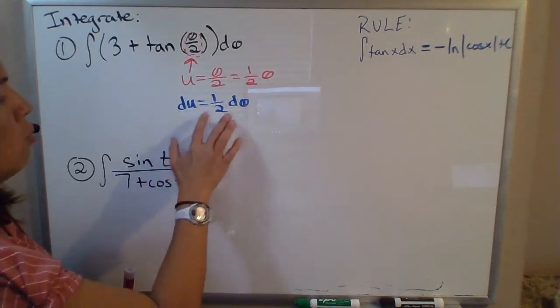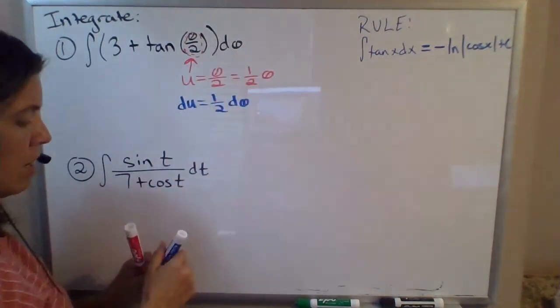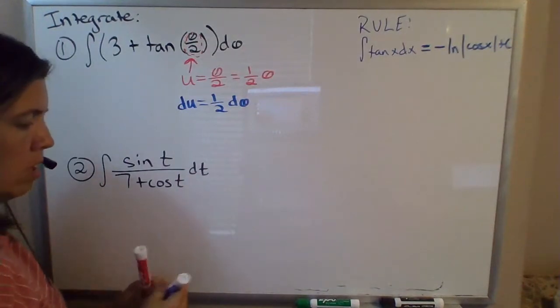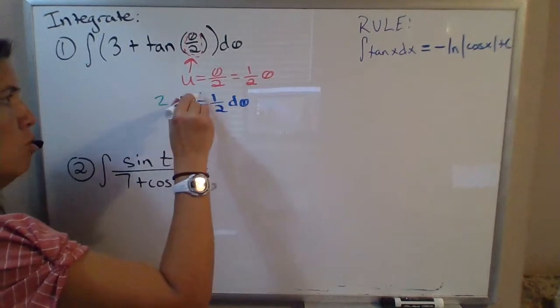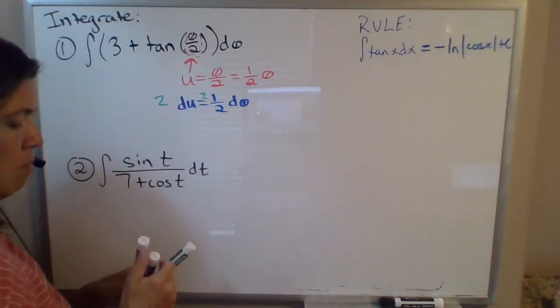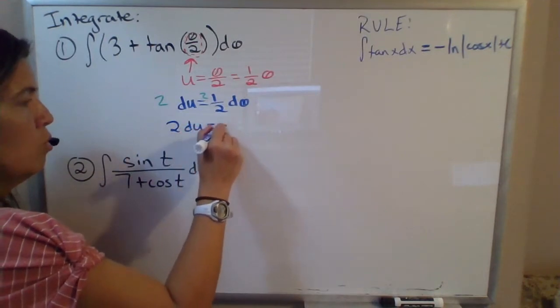Okay, well notice on the end here we don't have 1 half d theta, we just have d theta. So we could multiply both sides of this equation here by 2 and that would tell us that 2 du is equal to d theta.